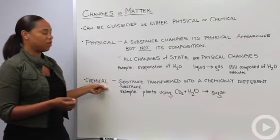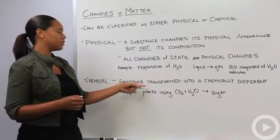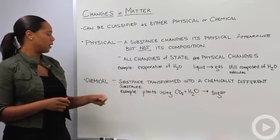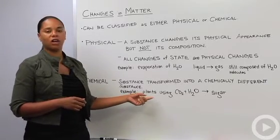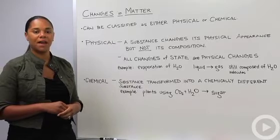On the other hand, you can have a chemical change, which is in essence a chemical reaction. That's when your substance is transformed into a chemically different substance. A good example is plants using carbon dioxide and water to form the sugar glucose. That is changes in matter.